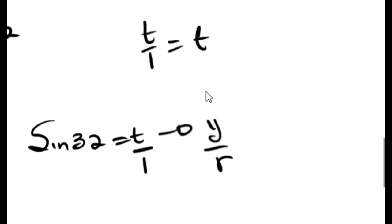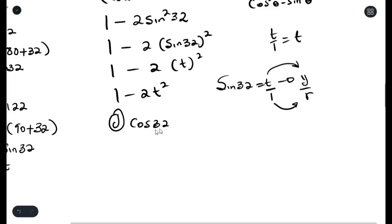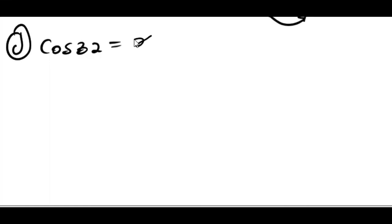t over 1 is the same as t. Writing it this way helps us determine that t is actually y and 1 is r. Since cos 32° equals x over r, we have r = 1 but we have no idea what x is. What we normally do is use Pythagoras.